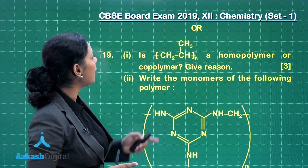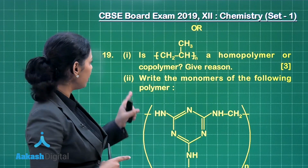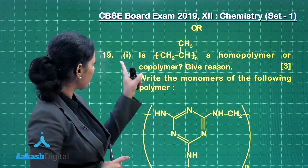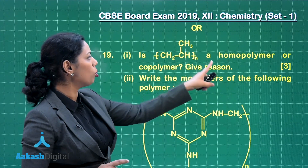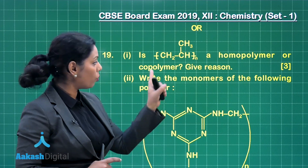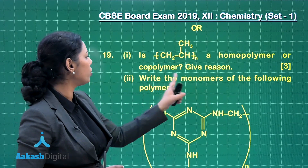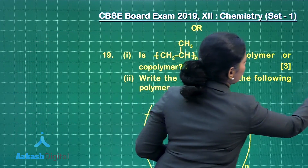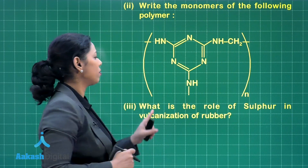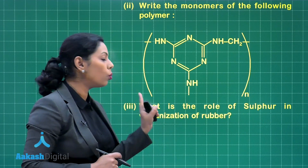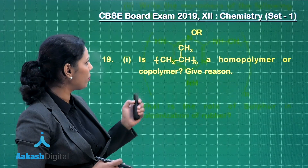But if you opt for the next part, that is the OR part, then we have to read the question once again. This also has three parts. The first part asks whether a given polymer is a homopolymer or a copolymer with reason. The second part asks you to write the monomers of a given polymer — I will show you the structure. The third part asks what is the role of sulphur in vulcanization of rubber.